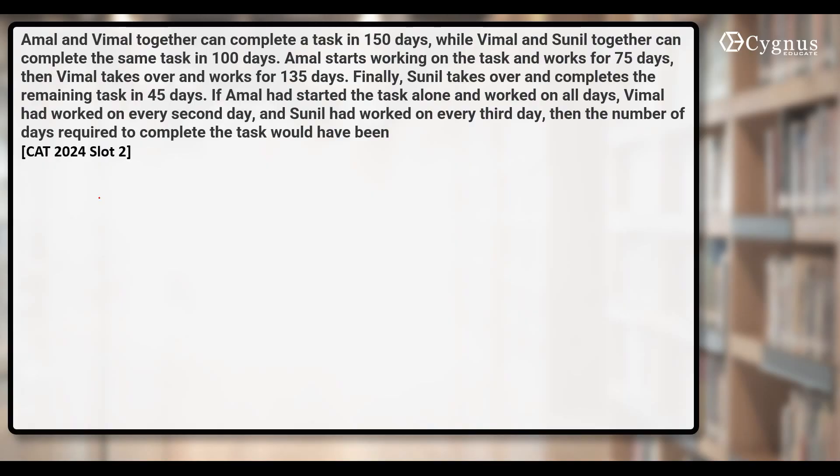Amal and Vimal together can complete a task in 150 days, while Vimal and Sunil together can complete the same task in 100 days. Amal starts working on the task and works for 75 days, then Vimal takes over and works for 135 days. Finally, Sunil takes over and completes the remaining work in 45 days. If Amal had started the task alone and worked on all the days, Vimal had worked on every second day, and Sunil had worked on every third day, then the number of days required to complete the task would have been how much?